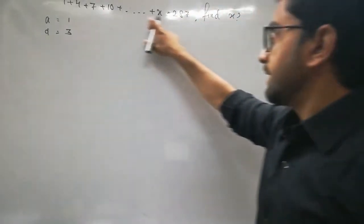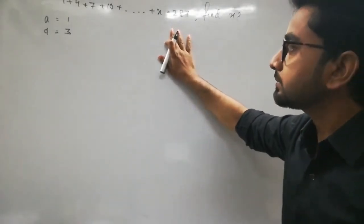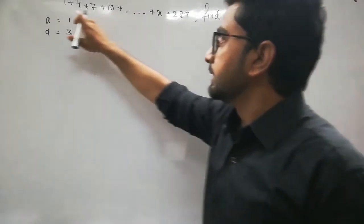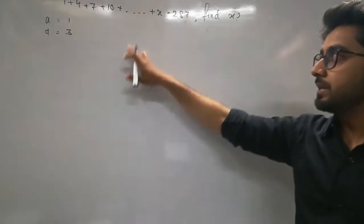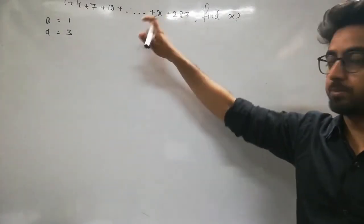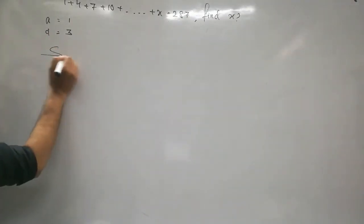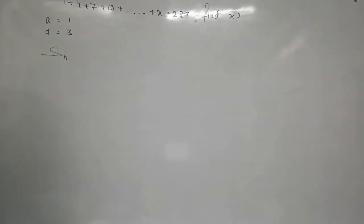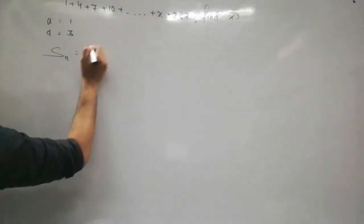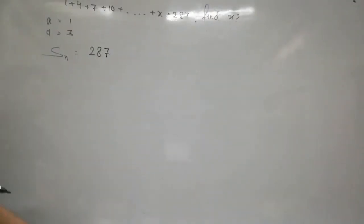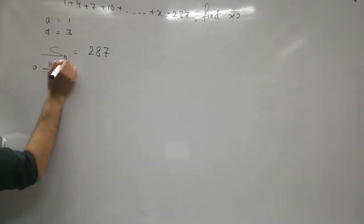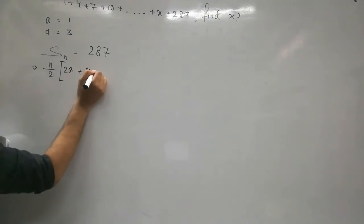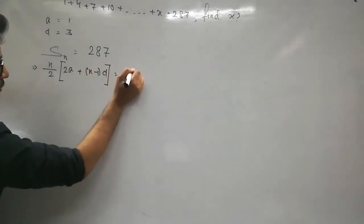We don't know how many terms are in this AP, but the sum of these terms is given as 287. So first we find the number of terms. Let there be n terms. Sum of n terms = 287. So: n/2 × (2A + (n−1)×D) = 287. Substituting: n/2 × (2×1 + (n−1)×3) = 287, which gives n/2 × (2 + (n−1)×3) = 287.